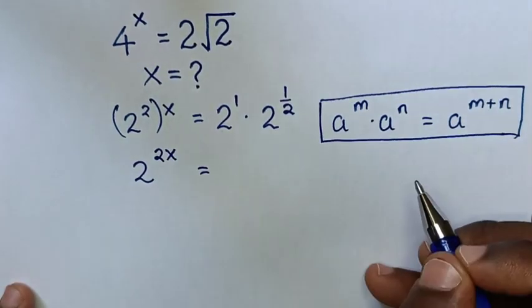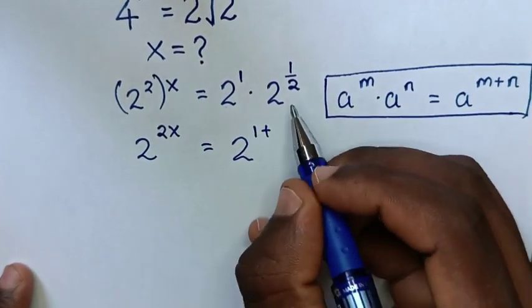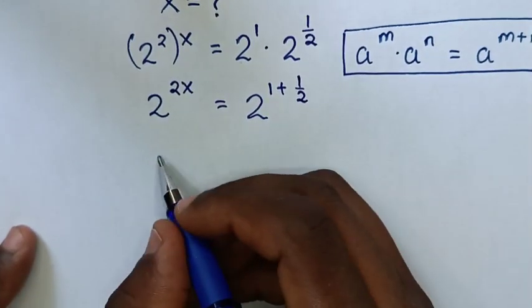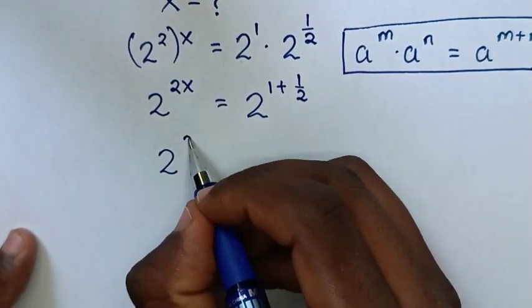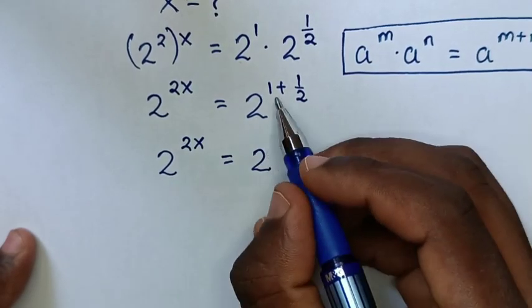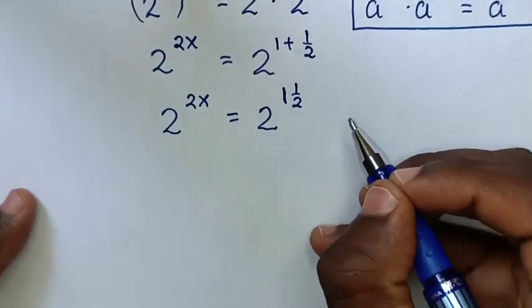Then in the next step, it will be 2 to the power of 1 plus one-half. Then our equation will be 2 to the power of 2x equals 2 to the power of 1 plus one-half, which is 1 and a half.